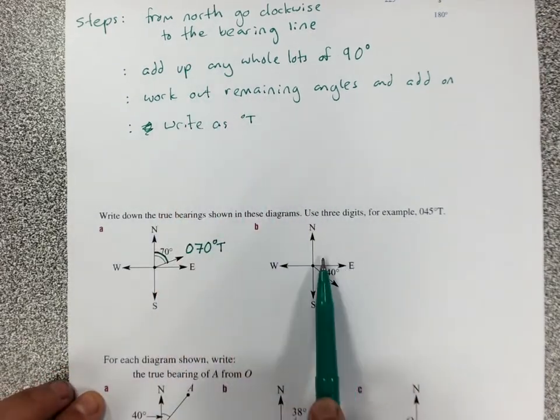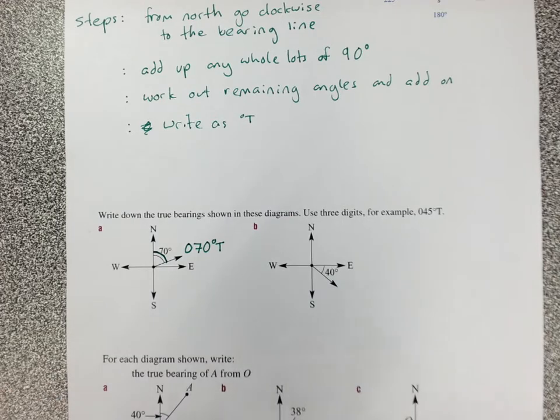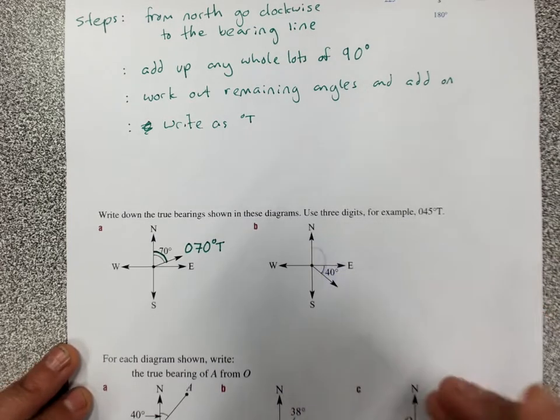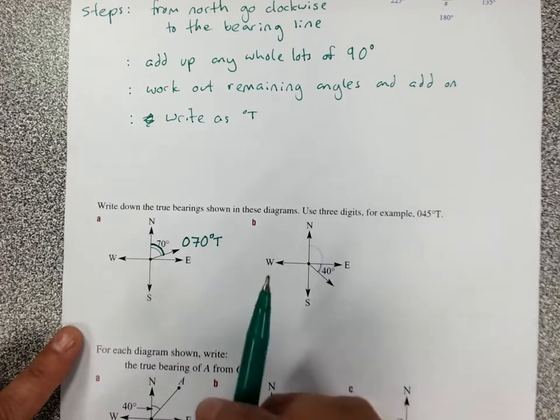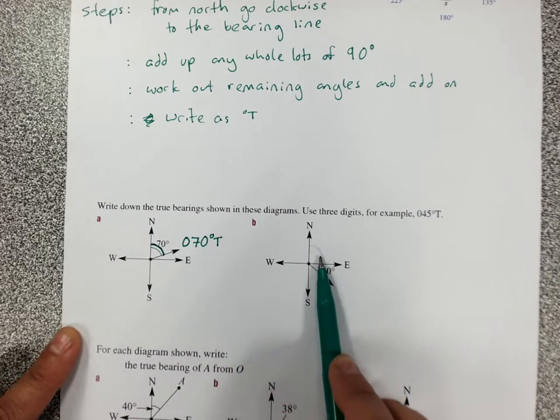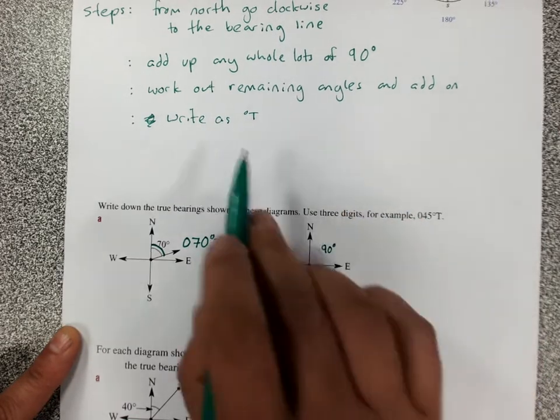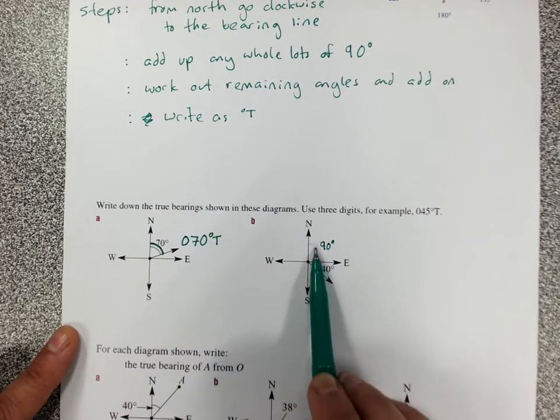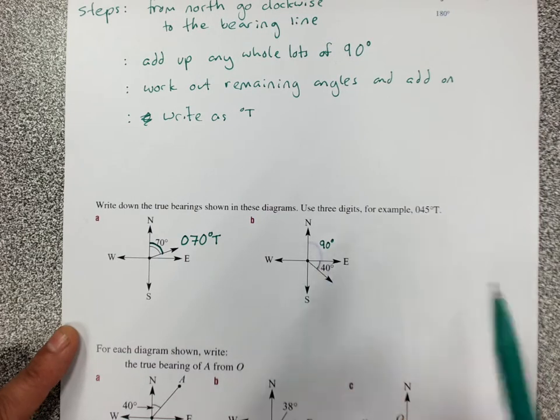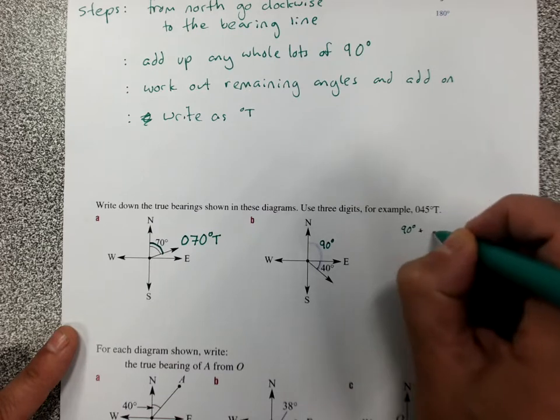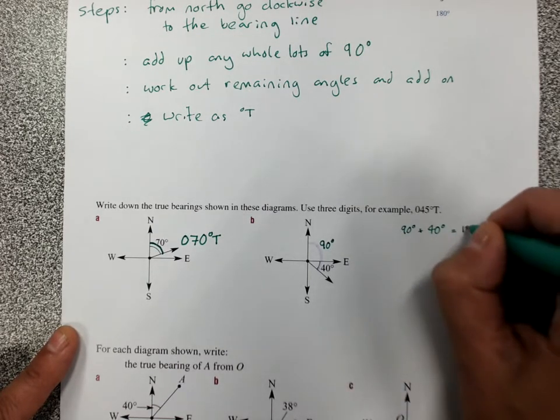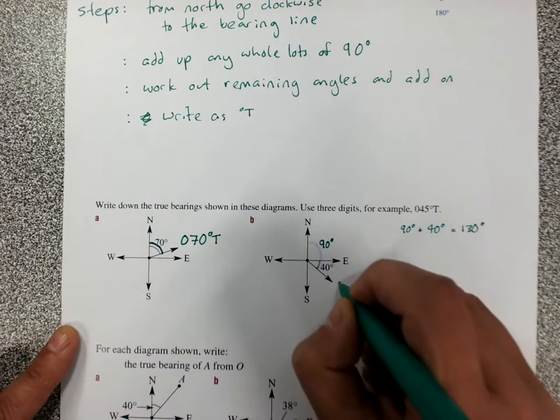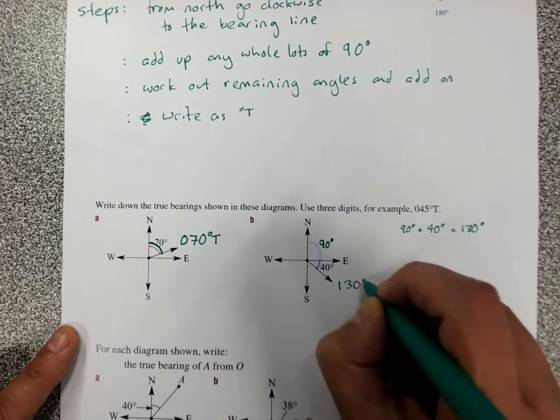So what I mean by this: write down the true bearings. From north we draw an angle clockwise, I'll get a different color pen, to the bearing line. So that whole angle is what I need. Add up any whole lots of 90, there's one whole lot of 90 degrees there. So I've only just got 90. Work out any remaining angles. In this angle that we just drew, well there's 90 and 40. So 90 degrees plus 40 degrees equals, add them up, 130 degrees. And then we write it, it's got to be three digits. That's already three digits at the end of the bearing, 130 degrees true.